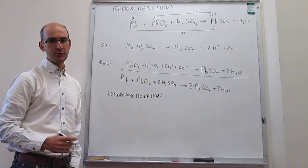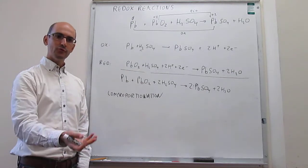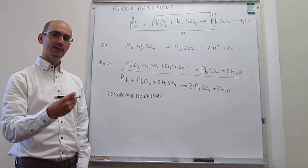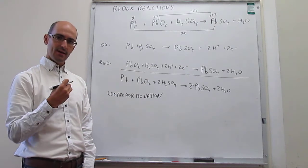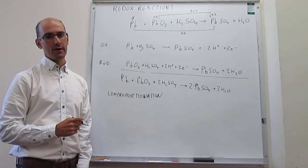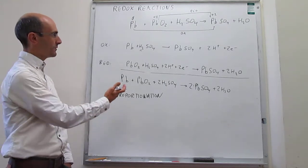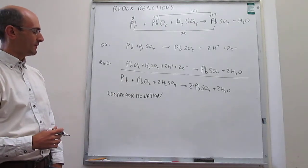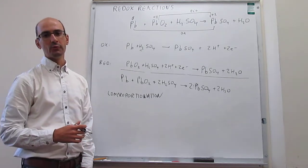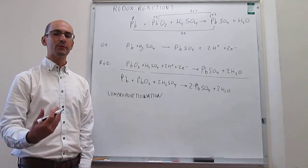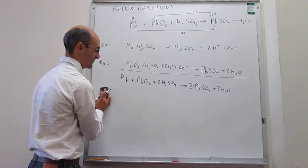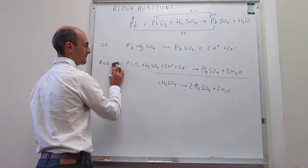The key of comproportionation reactions is that you have two reagents containing the same element in different oxidation states, and through a redox reaction they generate one unique product containing that element. The second example we're going to look at is disproportionation, which is exactly the opposite of this.